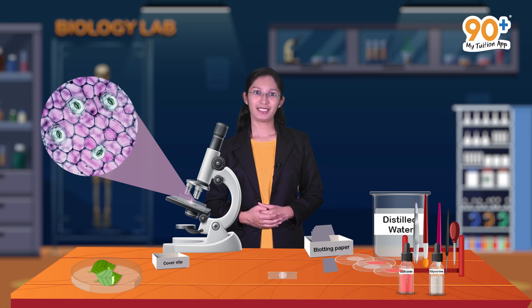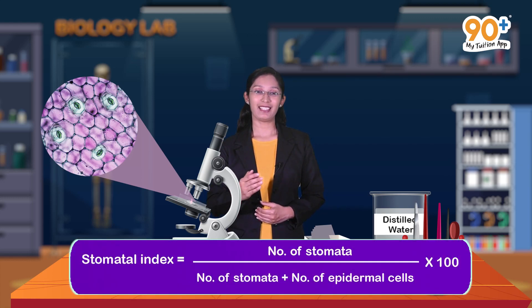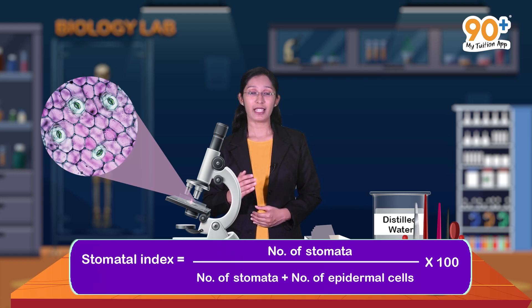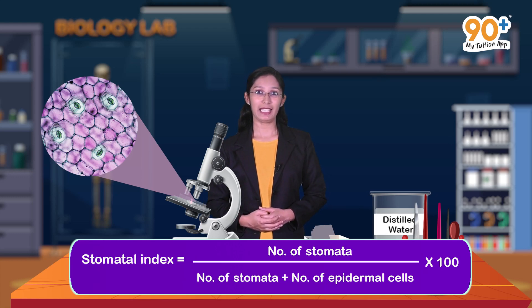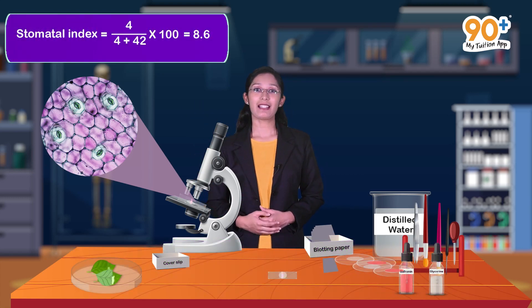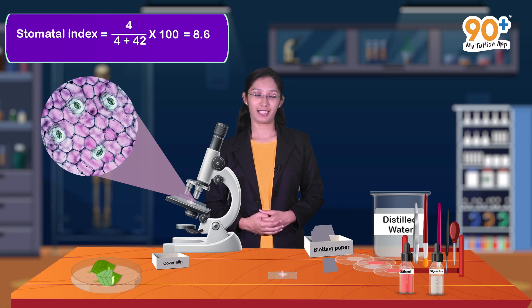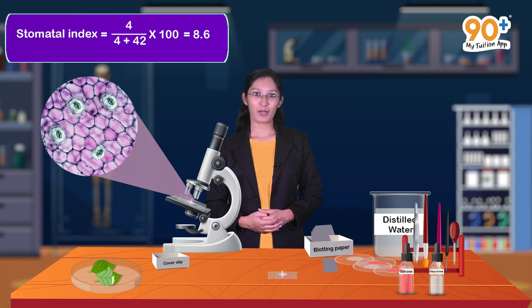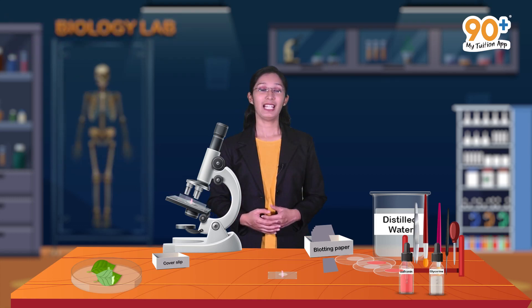Now we have to find out the stomatal index. The equation is: stomatal index = (number of stomata / (number of stomata + number of epidermal cells)) × 100. Substituting the values: stomatal index = 4 / (4 + 42) × 100 = 8.6. Therefore, the stomatal index obtained from the upper epidermal peel is 8.6.